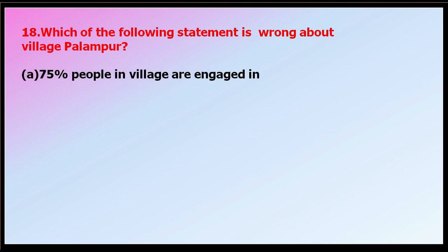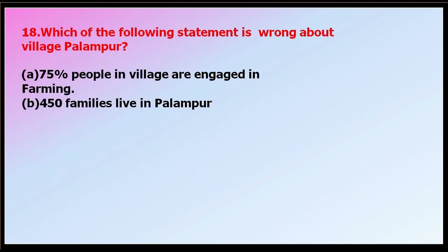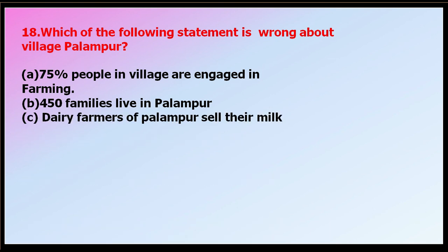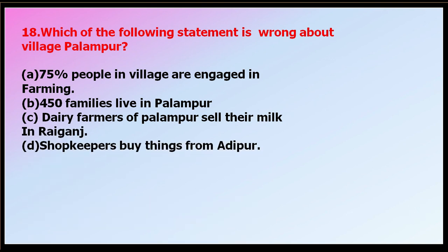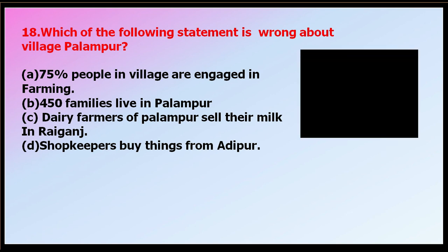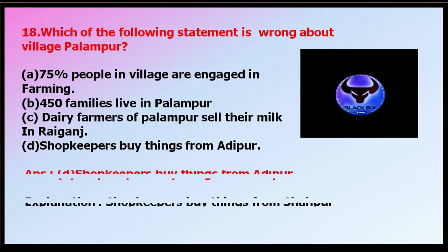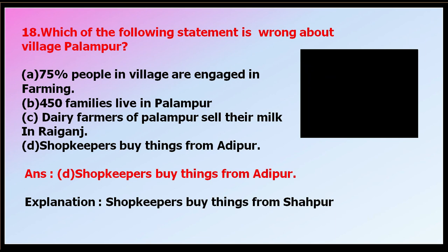Question number eighteen: which of the following statements is wrong about village Palampur? Options: 75% of people in the village are engaged in farming; 450 families live in Palampur; dairy farmers of Palampur sell their milk in Rai Ganj; or shopkeepers buy things from Adipur. The correct answer is shopkeepers buy things from Adipur — this is wrong. The correct statement is that shopkeepers buy things from Shahapur.